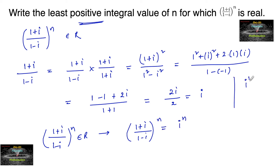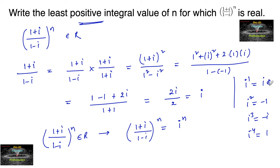Since we need the least positive integral value, we start from the smallest values. i to the power of 1 is i. i to the power of 2 is minus 1. i to the power of 3 is minus i. i to the power of 4 is plus 1. We can see that i to the power of 1 is i, which is not real, and i squared equals minus 1, which is a real number. So 2 is the smallest positive integer for which we get a real number.